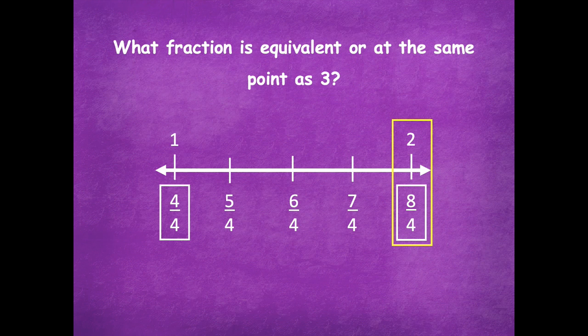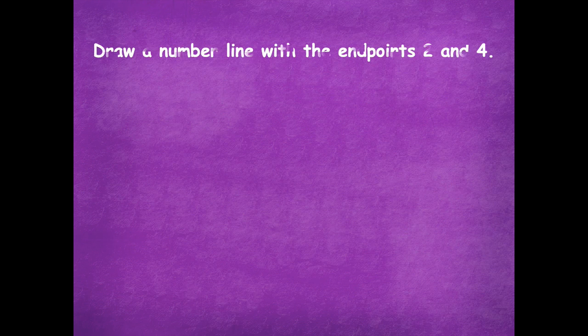What fraction is equivalent to three? This isn't on your number line, so let's think about how we'd figure that out. If you had to keep counting on to get to three on your number line, what would the equivalent fraction be? You could count up four more times: eight fourths, nine fourths, ten fourths, eleven fourths, twelve fourths — because you're counting up four more equal parts.